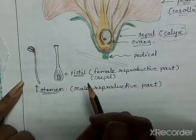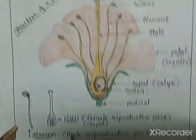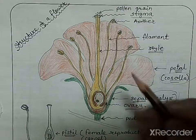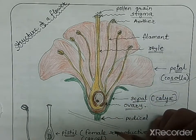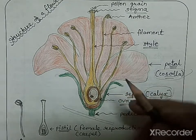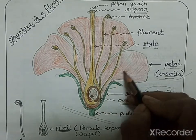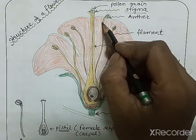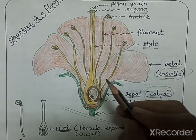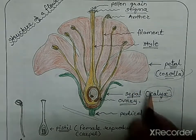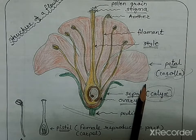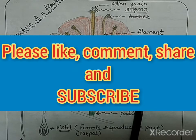In this video we discussed the structure of a flower — the four whorls: sepals, petals, androecium, and gynoecium. In our next video we will discuss the mechanism of sexual reproduction in plants, covering pollination, fertilization, and the formation of fruits and seeds. Till then, take care, bye bye, keep watching videos.